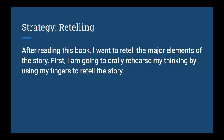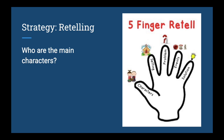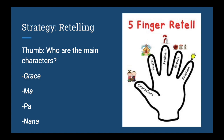So now that we've finished reading, I want to retell the major elements of the story. I'm going to orally rehearse my thinking by using my fingers to retell the story. Hold up your hand with me — we're going to retell the story by discussing the five major elements. The thumb is the characters, your pointer finger is the setting, middle finger is the problem, ring finger is the events from the story, and your pinky finger is the solution, which is how the problem is solved. The main characters are Grace, Ma, Papa, and Nana.